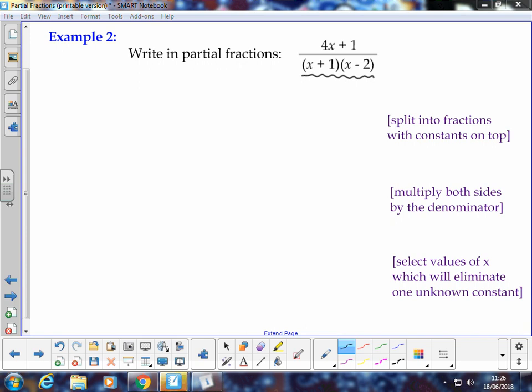So what we're going to have a look at here is if I write down 4x plus 1 over x plus 1 multiplied by x minus 2, then the first thing that we can see here is, if we have a look,